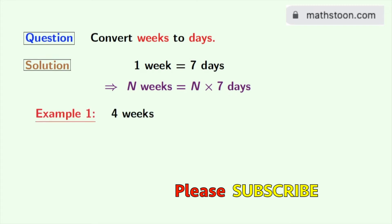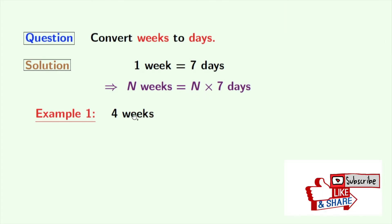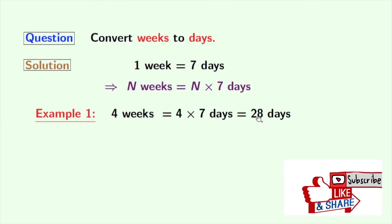Our first example is 4 weeks. We will convert 4 weeks into days using this rule. So 4 weeks can be written as 4 times 7 days, which is equal to 28 days.